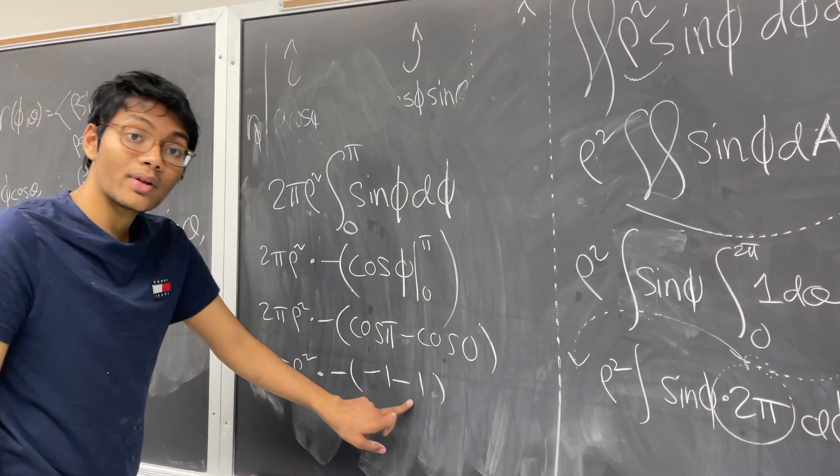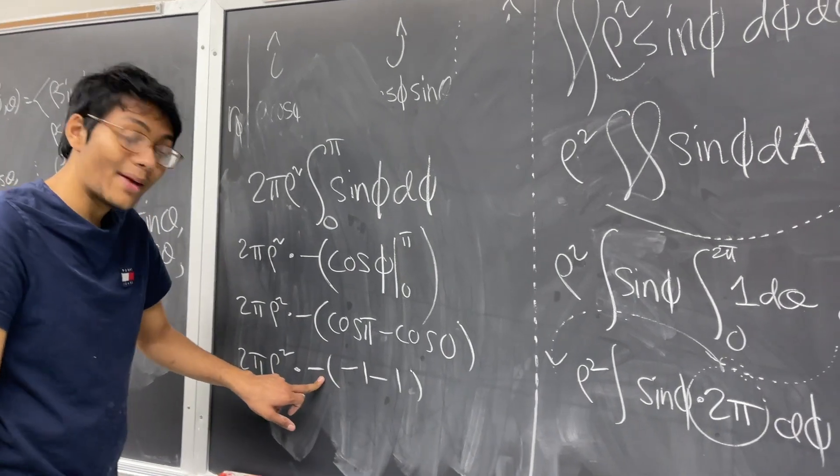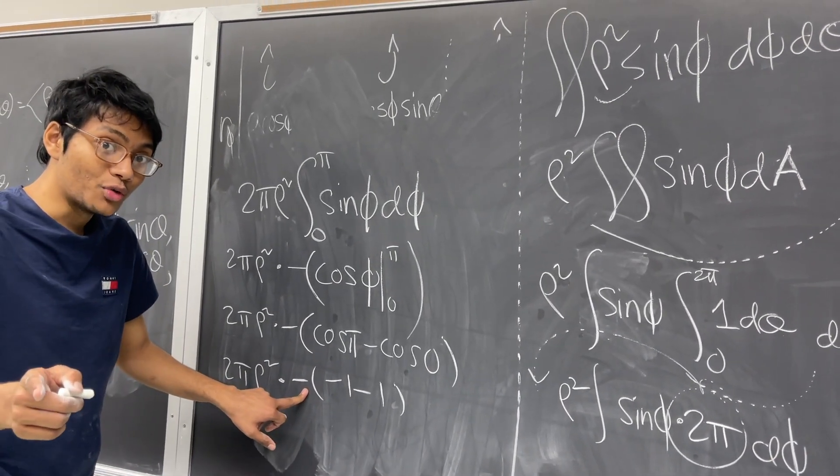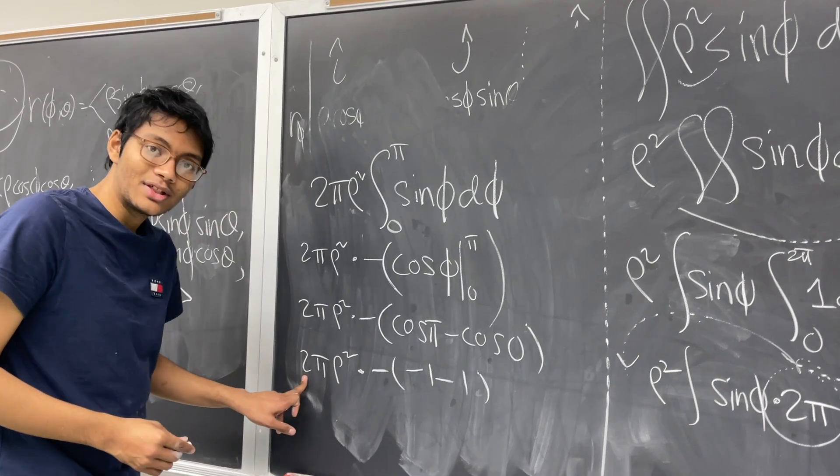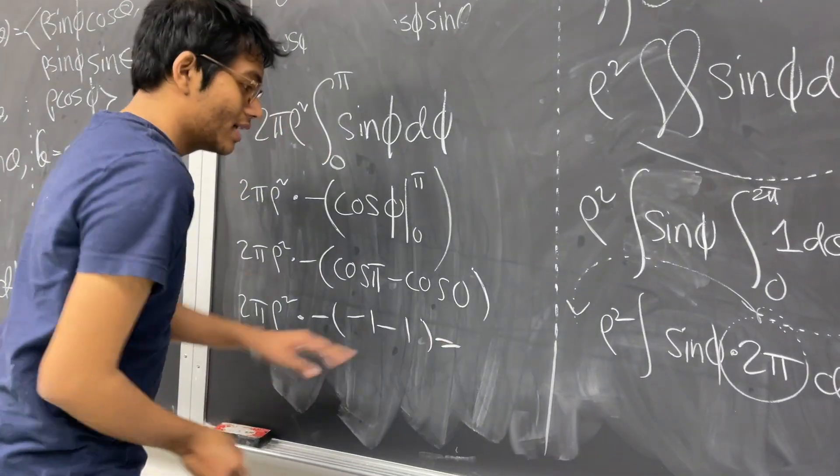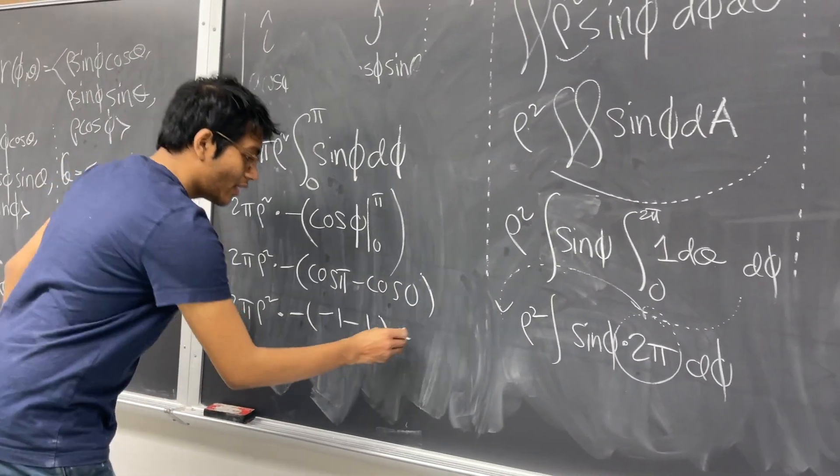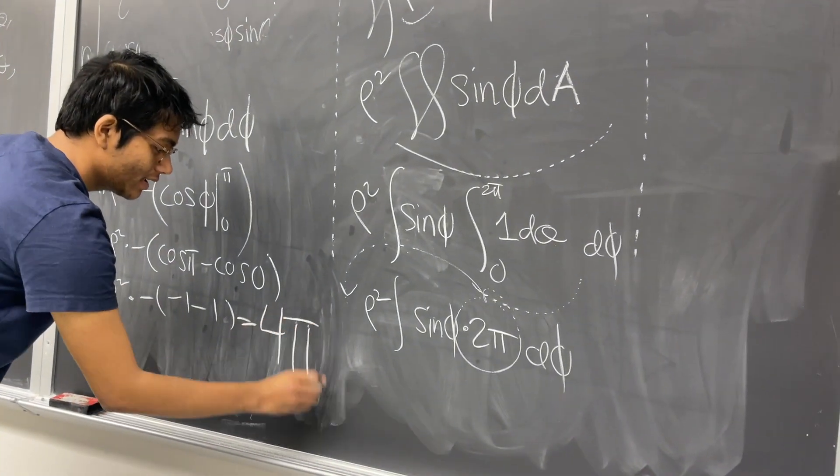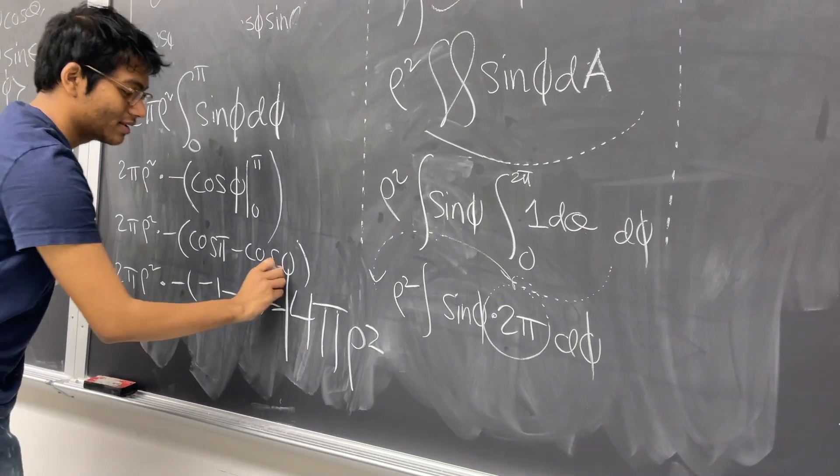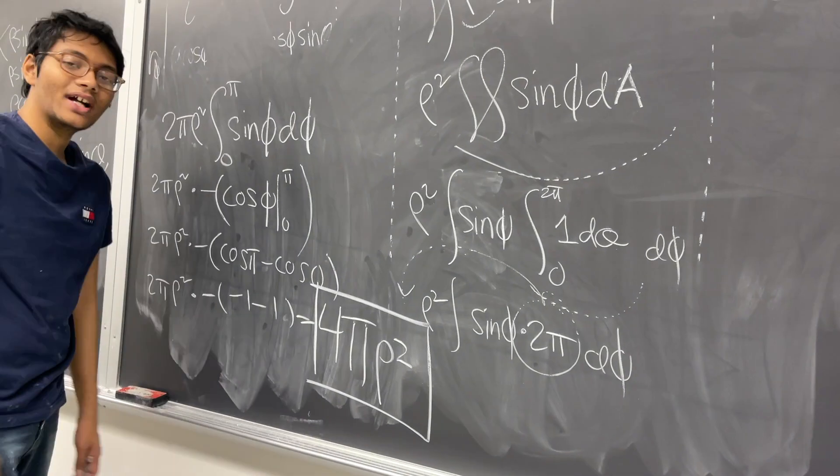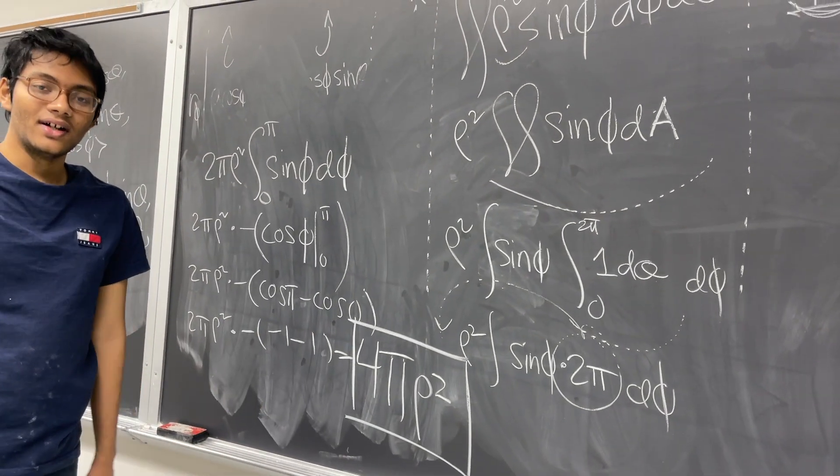Okay, so minus 1, minus 1, that's minus 2, times minus is 2, positive 2, times 2 gives us 4 for a final answer of 4 pi rho squared. And that is how you find the surface area of a sphere.